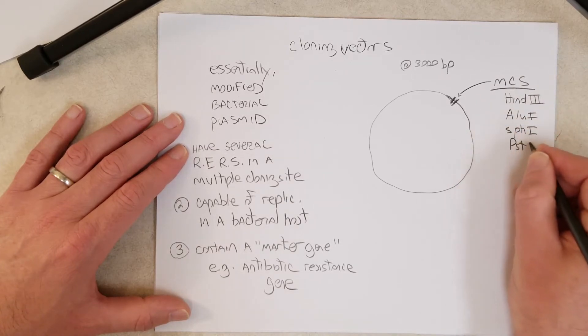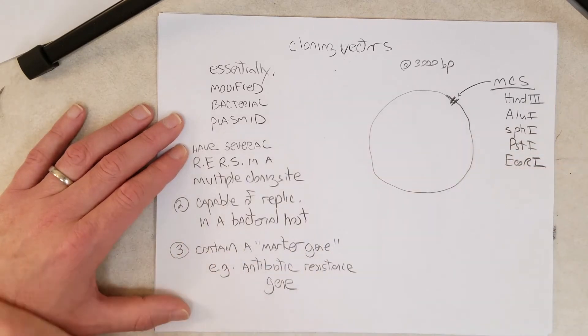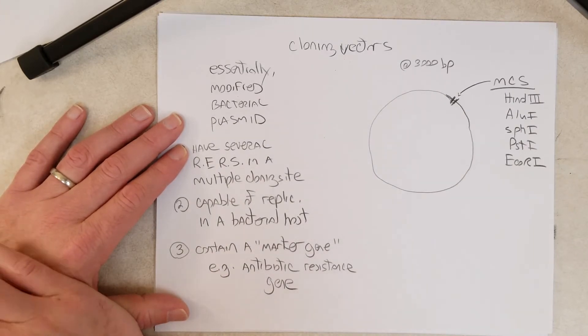or PST-1. And I think we will use, we might take a look at ECOR-1 soon. The best cloning vectors contain anywhere from 10 to 20 different restriction enzyme recognition sequences.